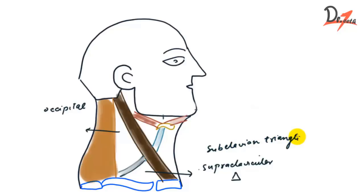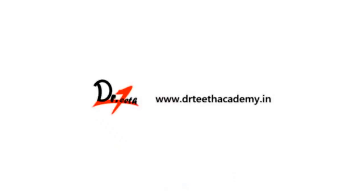So that was a short overview of the divisions of the neck into the anterior triangle and posterior triangle. In the next video we will study about the boundaries and contents of these triangles. I hope you found this video helpful — if yes, please let me know in the comment section below. Thanks for watching.